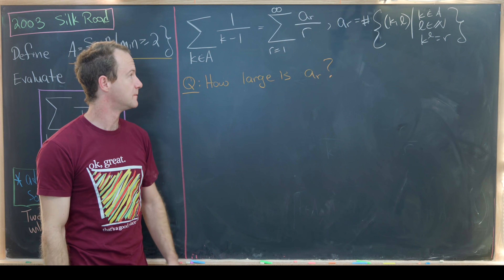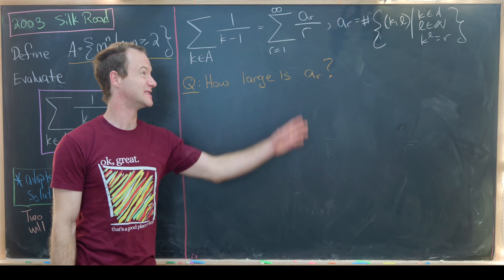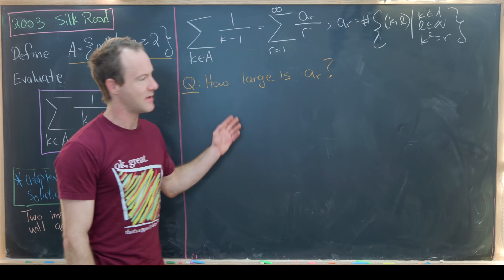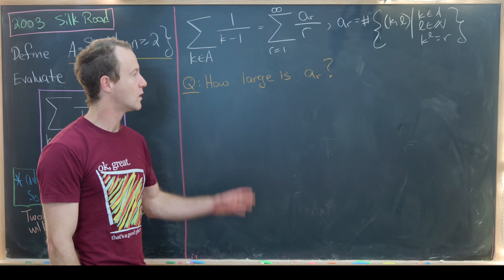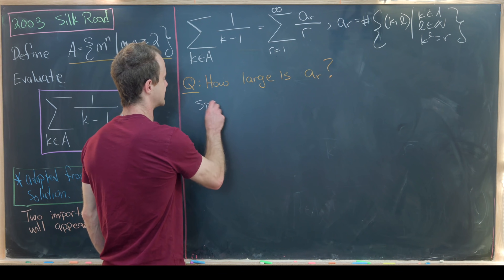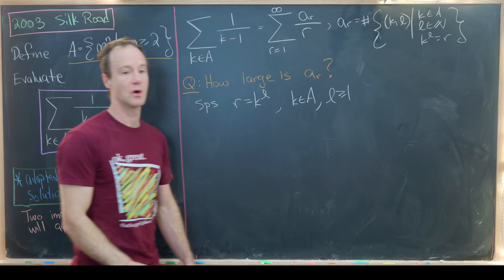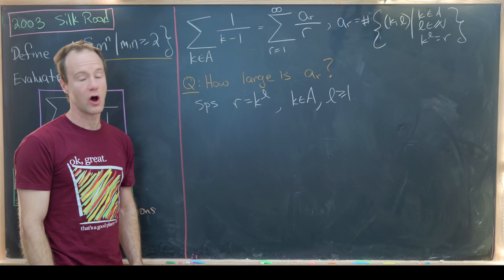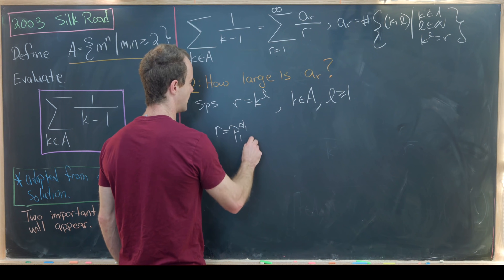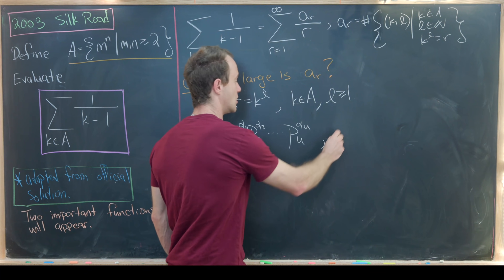On the last board, we took our goal sum and rewrote it as the sum as r goes from 1 to infinity of a_r over r, where a_r was the number of elements in this constructed set. Now we're going to look at the question: how large is a_r? Let's suppose that a_r is non-zero and take that number r. In other words, we're going to suppose that r equals k to the l, where k is an element from A and l is bigger than or equal to 1.